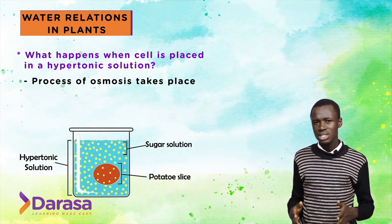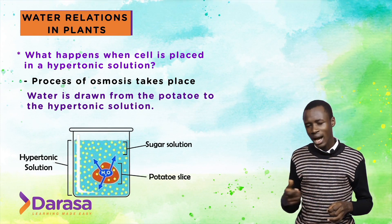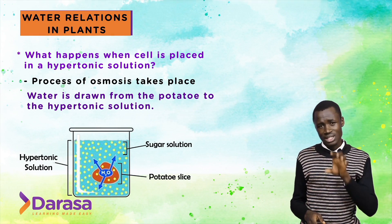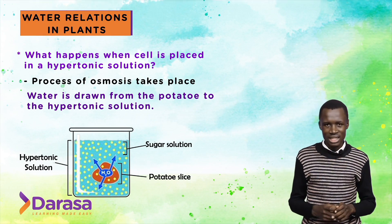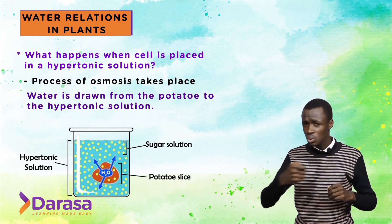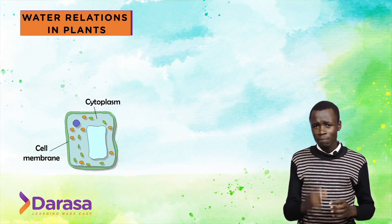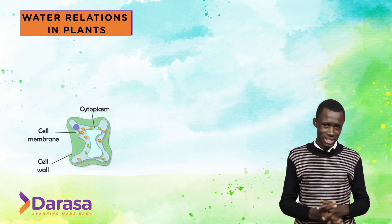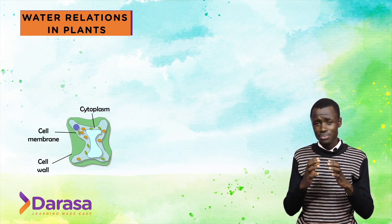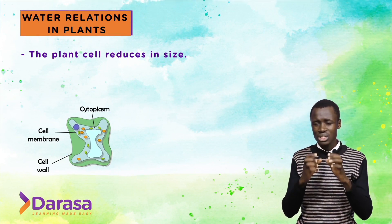Osmosis takes place: water is drawn from the potato cube into the hypertonic sugar solution, because the cell sap is at a lower concentration than the sugar solution. Water moves from the cell sap to the sugar solution through osmosis, and so the plant cell shrinks and reduces in size.